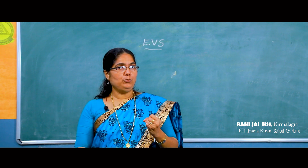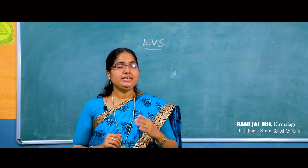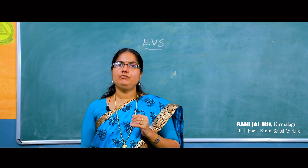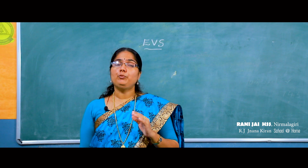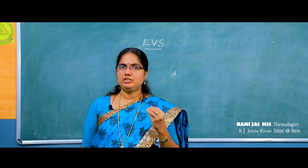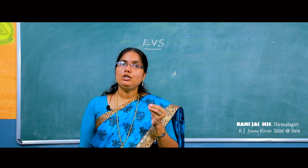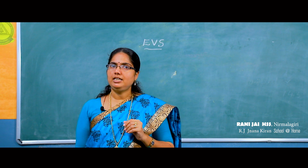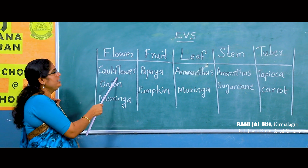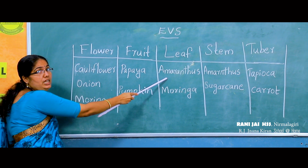We use the fruit, leaf, and flower of some plants for food. For example, muringa — we use its leaf, fruit, and flower. We use cauliflower as a food. Papaya is used as a fruit. Amaranthus leaf is used as food. We also use stem — for example, sugarcane stem. Tapioca is used as a tuber.